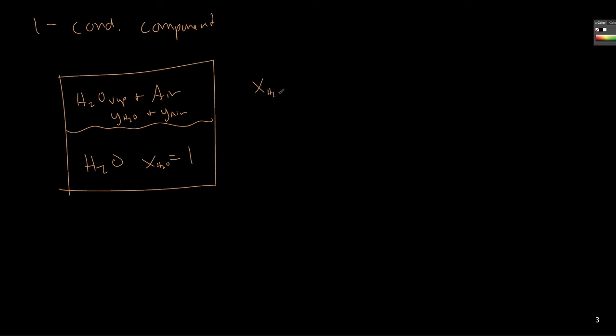we would have X_H2O P star H2O, that's the vapor pressure of water, is equal to the mole fraction in the vapor phase times by the system pressure. But recall that we're going to approximate this as 1, so that we can write that the mole fraction of water in the vapor phase is going to be equal to the vapor pressure divided by the total system pressure.